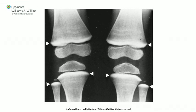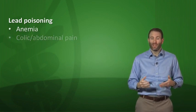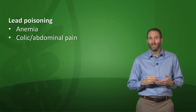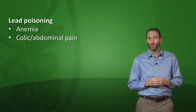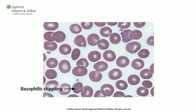Severe lead toxicity causes decreased hemoglobin synthesis resulting in anemia and colicky abdominal pain. The mechanism: lead inhibits ferrocheletase and ALA dehydratase, decreasing hemoglobin synthesis. Lead also inhibits rRNA degradation, causing RBCs to retain rRNA segments — this results in basophilic stippling on peripheral blood smear, and ringed sideroblasts in the bone marrow.